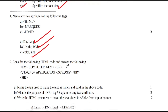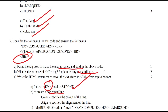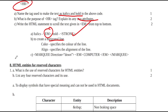Consider the following HTML code and answer the questions: em computer em, then br, then strong application strong, then br, then hr. Name the tag used to make the text italics: em. Name the tag to make text bold: strong. What is the purpose of hr? The hr tag creates a horizontal line, and its attributes include color and alignment.